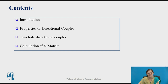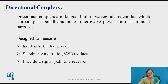These are the contents. Directional couplers are flanged built-in waveguide assemblies which can sample a small amount of microwave power for measurement purposes. Mainly, directional couplers are designed to measure incident or reflected power. They are used to measure standing wave ratio values and also used to provide a signal path to a receiver.